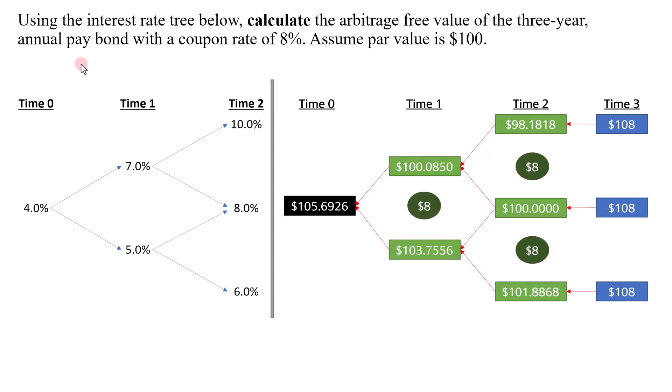In this video, I'm going to show you how you can use the store and recall function in the Texas BA2 financial calculator to speed up the calculation of the no arbitrage free value using the backward induction valuation methodology.